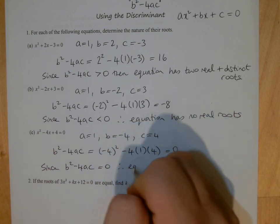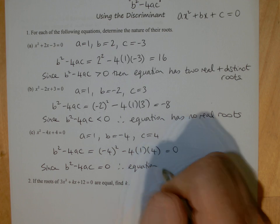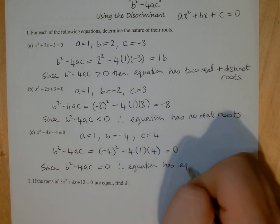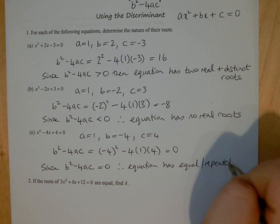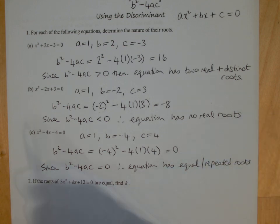So therefore, the equation has equal, or we say repeated roots. So this is the case where the curve will just touch the x-axis, so it'll have one point of intersection with the x-axis.